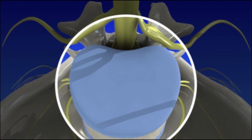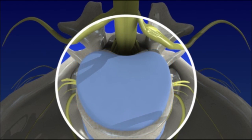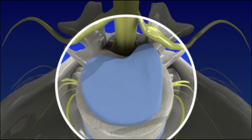With age, discs lose water content and become narrower, less flexible, and less effective as shock absorbers. As a disc deteriorates, the outer layer can weaken and tear.